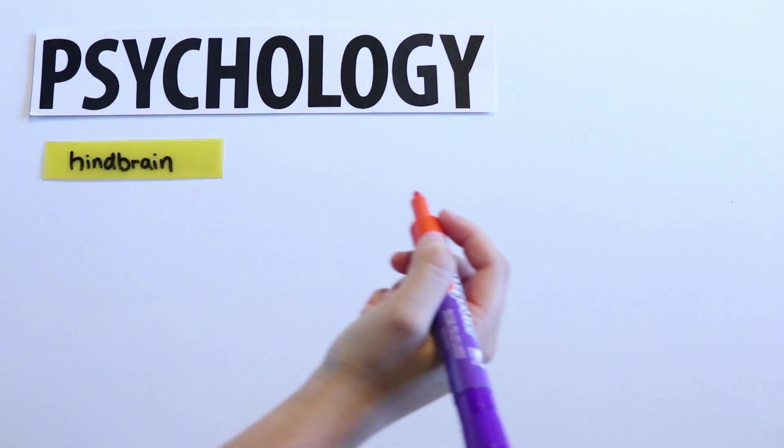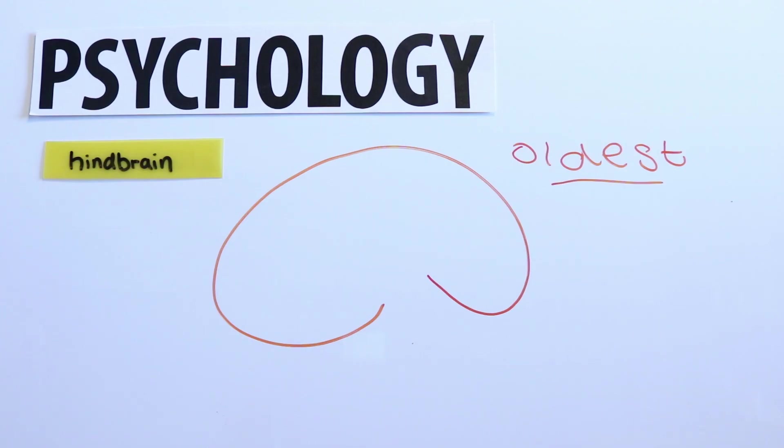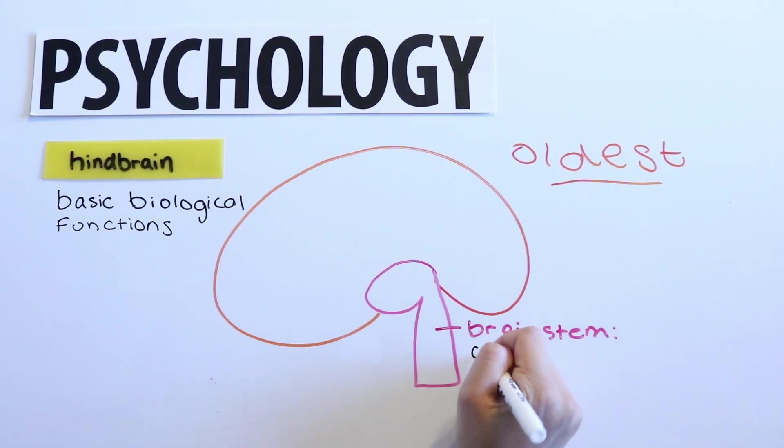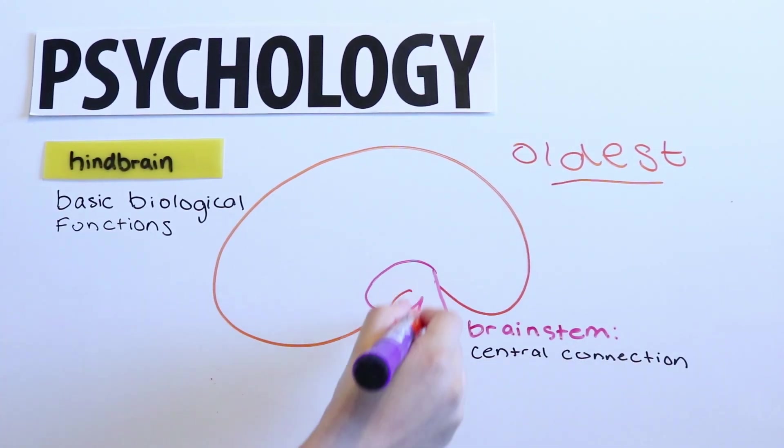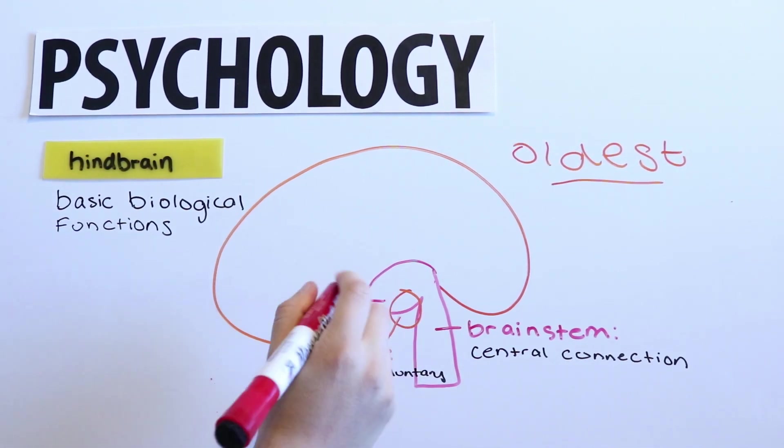The hindbrain rests at the top of the spinal cord and is the oldest, most ancient part of the brain. It evolved first and has kept us alive by controlling our most basic biological functions. It consists of the brain stem, the central connection between the spinal cord and our skull, the medulla, which controls involuntary but necessary actions such as our breathing, blood pressure, and heart rate.